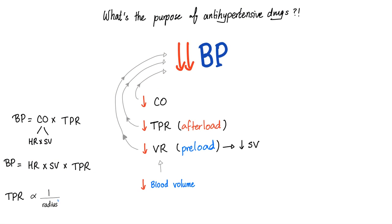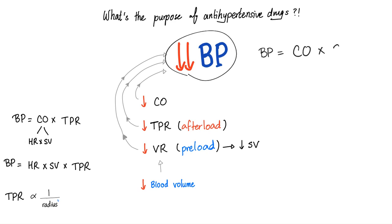Unfortunately, most people will need medications. So what is the purpose of antihypertensive medications? To decrease the blood pressure. So how do we lower the blood pressure? Remember the equation from physiology: mean systemic arterial blood pressure equals cardiac output times systemic vascular resistance. And cardiac output equals heart rate times stroke volume. So if you would like to lower the blood pressure, you either lower the systemic vascular resistance, lower the stroke volume, or lower the heart rate.